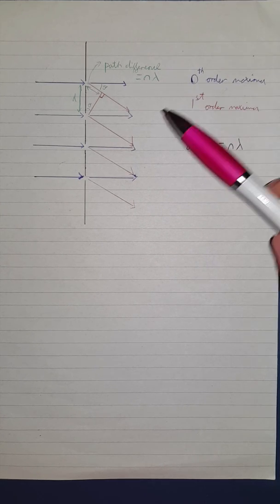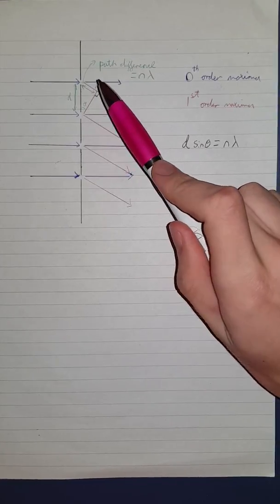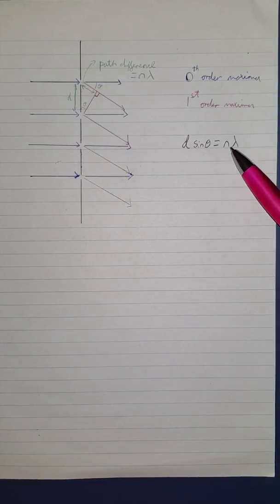Therefore, we can say d sin theta equals the path difference, which is n times the wavelength, n being the order of maxima that you want.